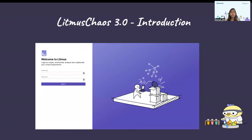Starting off with the introduction: a couple of months back we introduced LitmusChaos 3.0. The main idea behind it was making the whole chaos experimentation process more lean, easier, and developer-friendly so that it can be used not only by SREs but also easily by developers, so that chaos engineering can be adopted in all stages of the software development lifecycle.